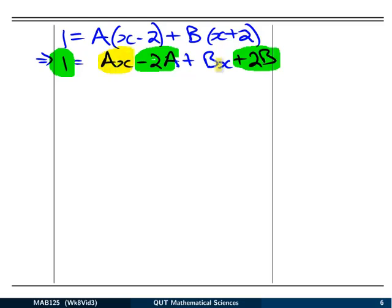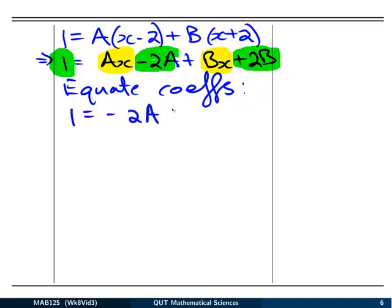And then we've got some x terms. There's no x terms on the left but there are some on the right. So what we're going to do is equate the coefficients of powers of x. On the left we've got 1 is equal to -2A plus 2B, and 0x's is equal to Ax's plus Bx's.